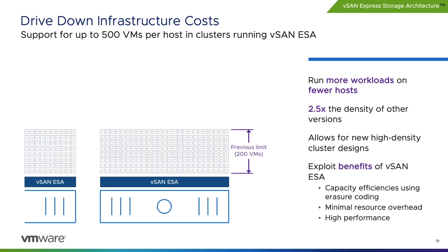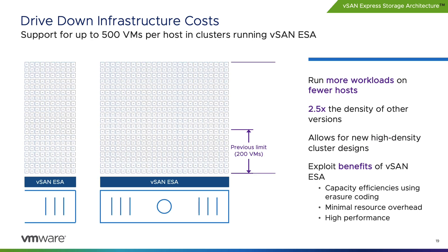One hallmark of the vSAN ESA is its efficiency — not only in data storage but in data processing. With the reduced effort it takes to process I/O, we've been able to increase the supported number of VMs per host from 200 up to 500 VMs per host. This massive increase in VM density allows customers to take advantage of the latest hardware, running more VMs over fewer hosts and building high-density cluster designs. Note that VMware Horizon is not yet compatible with the Express Storage Architecture.